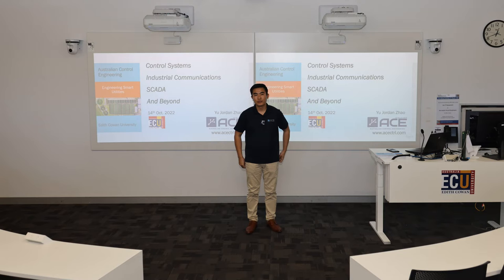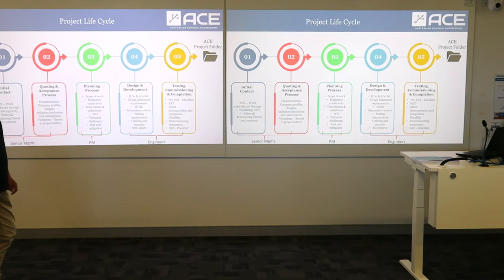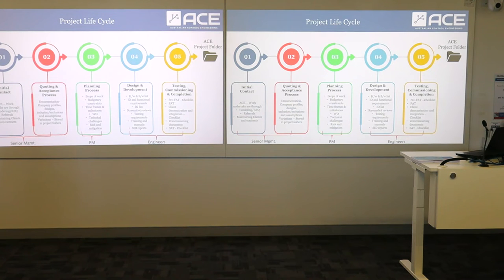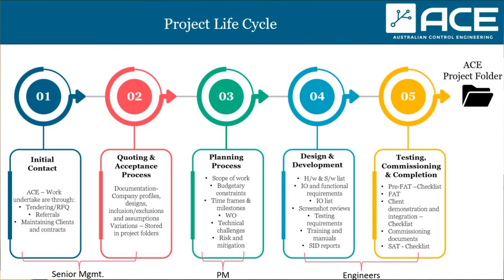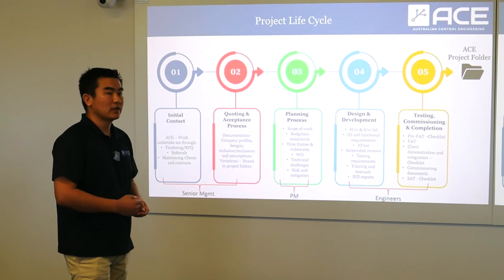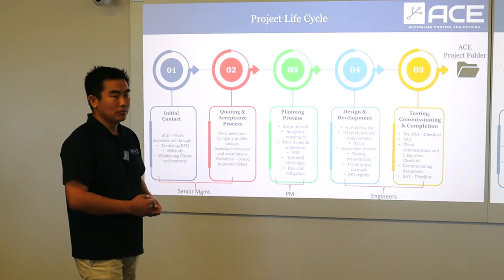The remaining three stages are the most important for project managers and engineers like ourselves. The third stage is the planning process. We form a team led by a senior or lead engineer with other engineers under them. In that planning process we kick off the project with meetings, making sure to include scope of work, budgetary constraints, timeframes and milestones, work orders, technical challenges and solutions, and risks with appropriate mitigation methods — all taken care of by the project manager at ACE.